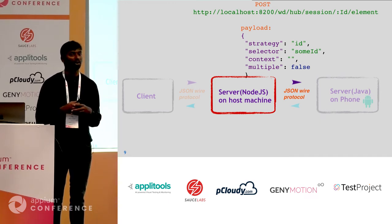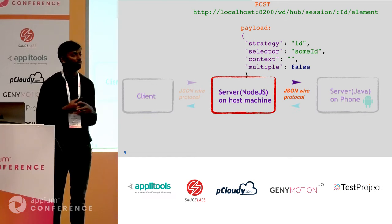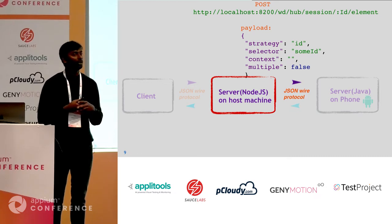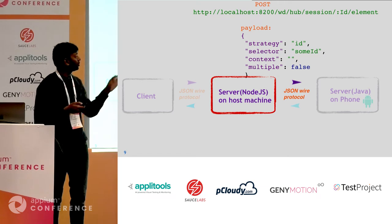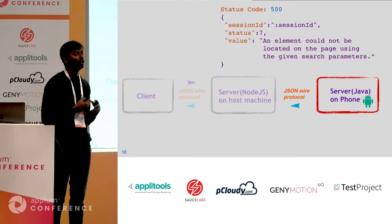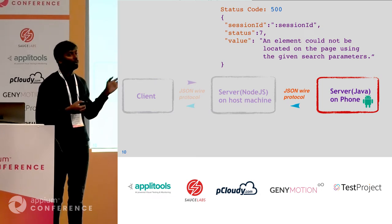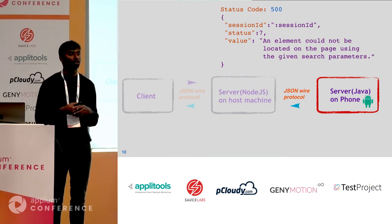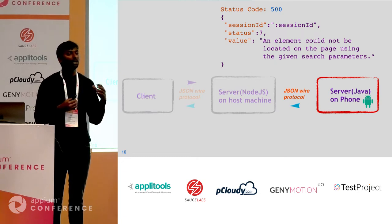When you make this request from the client, it hits the Appium server running on your host machine. The Appium server consumes the request and tries to find out who is responsible for the given implementation. If the server itself is responsible for implementing find element, it will execute the implementation. If not, it forwards the request to the server responsible for the implementation — in this case, the server running on your phone. That server consumes the request, acts on it, and sends the response back.